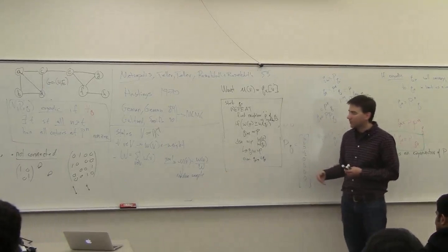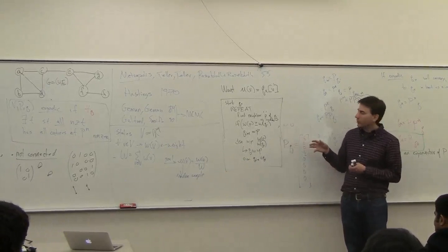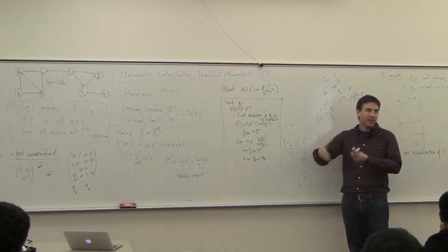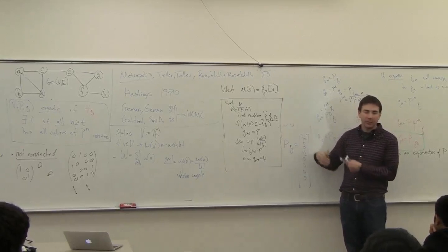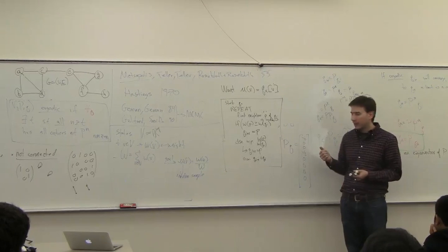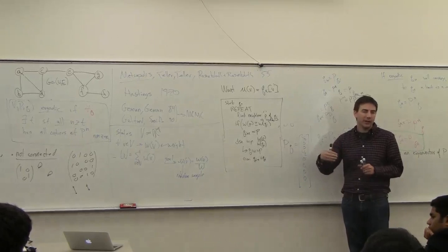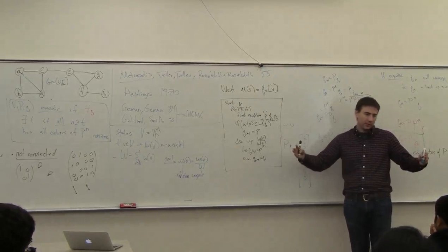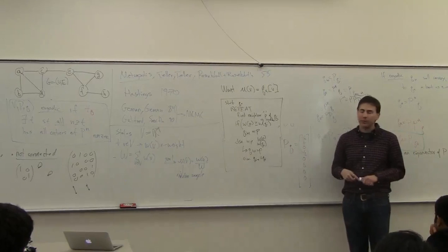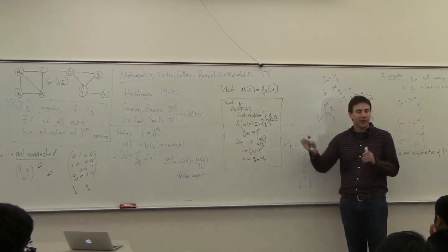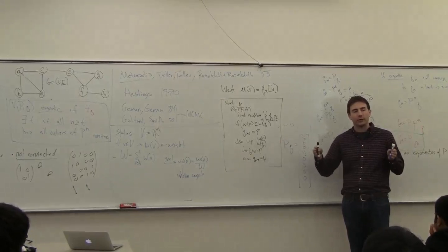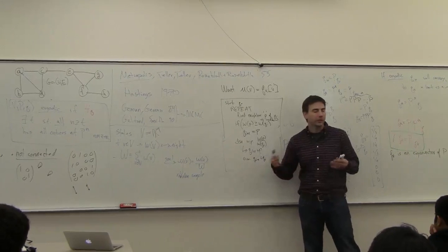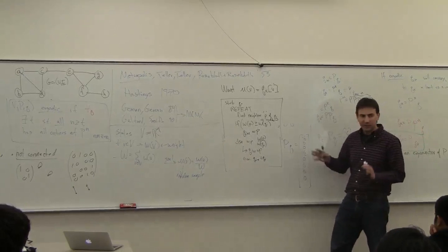Now, in practice, that's not how people use this. What they do is they say, I'm going to go for a thousand steps and then I say my chain is mixed. I'm at some state that's probably from the Q star distribution. And then I'm going to take the next 5,000 steps and collect those 5,000 states and that's my random sample. And that tends to work more efficiently. Sometimes you have to kind of discount, you have to pretend that those 5,000 are actually a thousand samples when you're doing the approximation bounds on how big the sample is.